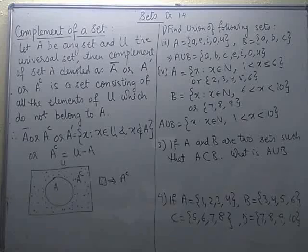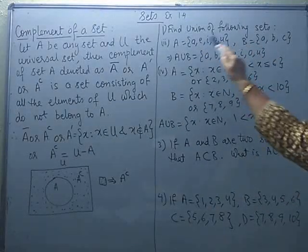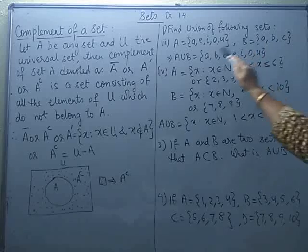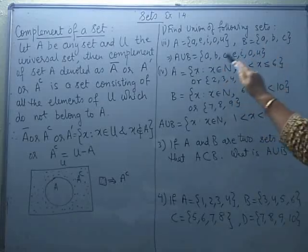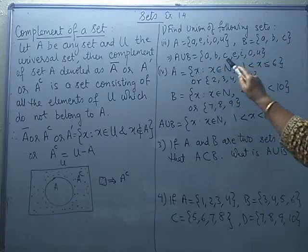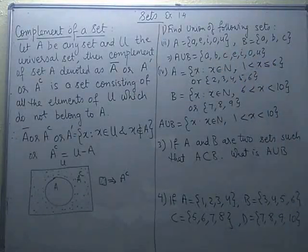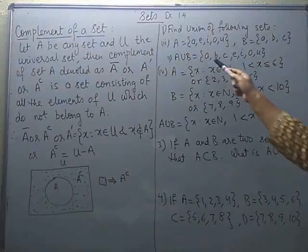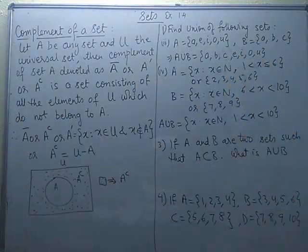If they are belonging to both, we will write it only once. You can see A is in both the sets, so A will come definitely. Then B, C, A, E, I, O, U — each element of A as well as B. It was only A which was appearing in both, so we wrote it only once.